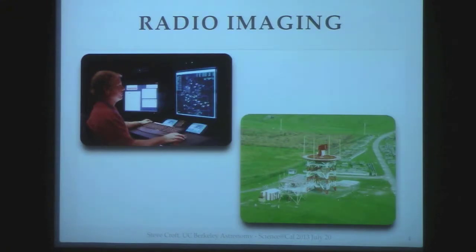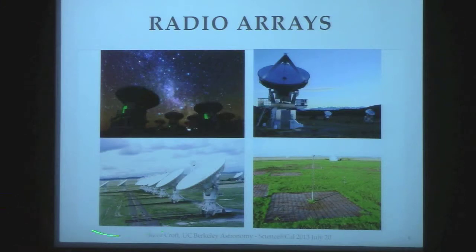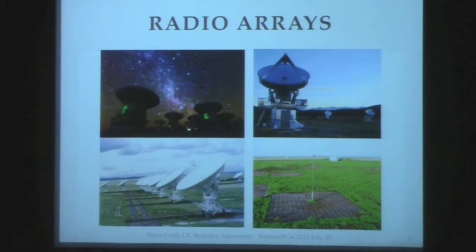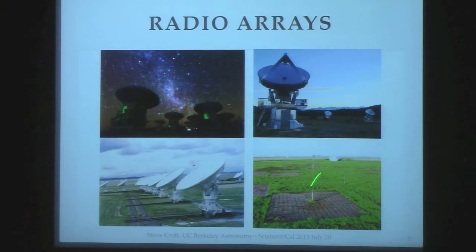One advantage in radio astronomy is that we can build arrays of dishes. This is the Very Large Array in New Mexico, ALMA in South America, CARMA in the Inyo Mountains east of Bishop — a telescope UC Berkeley is actively involved in — and the LOFAR telescope in the Netherlands, which is literally wires standing in a muddy field. You can get a lot of collecting area by combining signals from multiple telescopes. This telescope spans all across Northern Europe, replacing a lot of steel with silicon — using supercomputers to combine signals from relatively simple antennas.